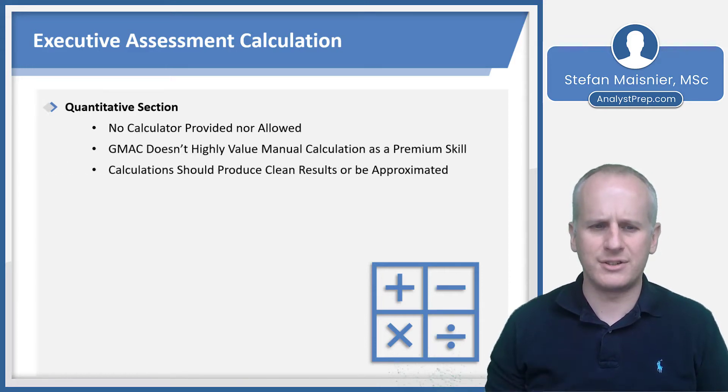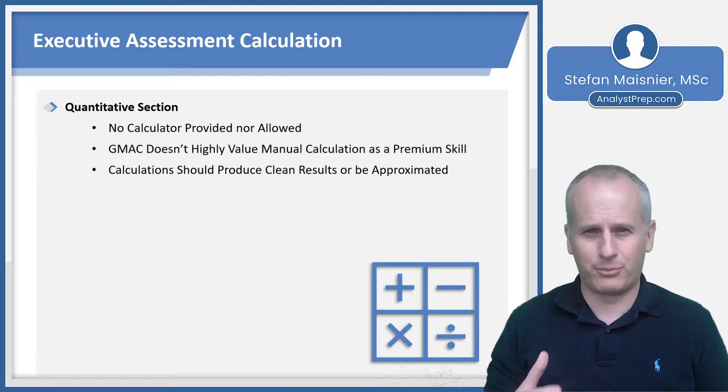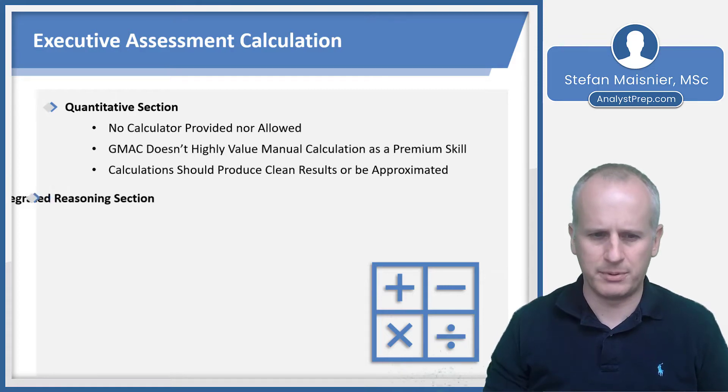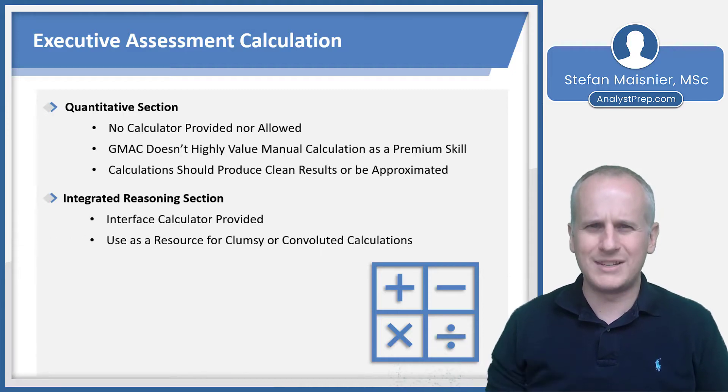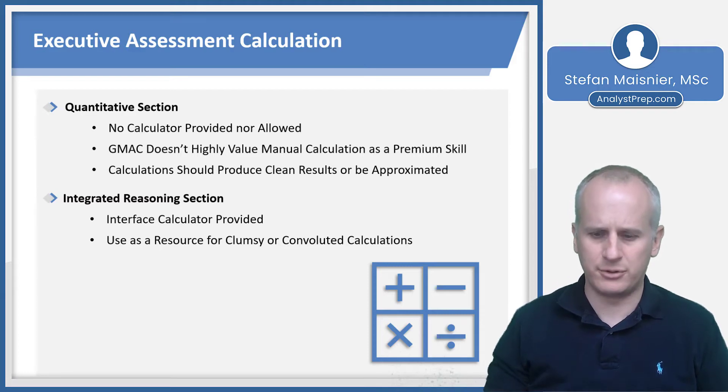Your calculations in the quantitative section should produce clean results or otherwise be approximated. You shouldn't have to do too much convoluted math here, and you should be able to round if necessary when the math gets a little bit strange. But in the integrated reasoning section, an interface calculator is provided. You're going to use that as a resource that's available in this section, the first section of the executive assessment that isn't available in the concluding quantitative section. The exam expects you to be able to use that calculator for somewhat convoluted and clumsy calculations.